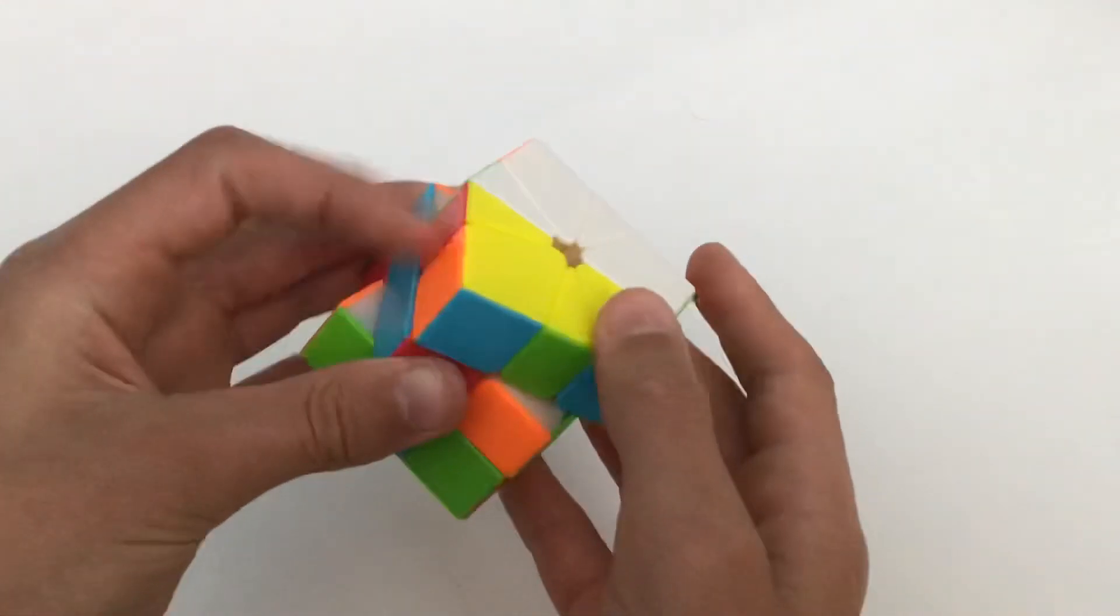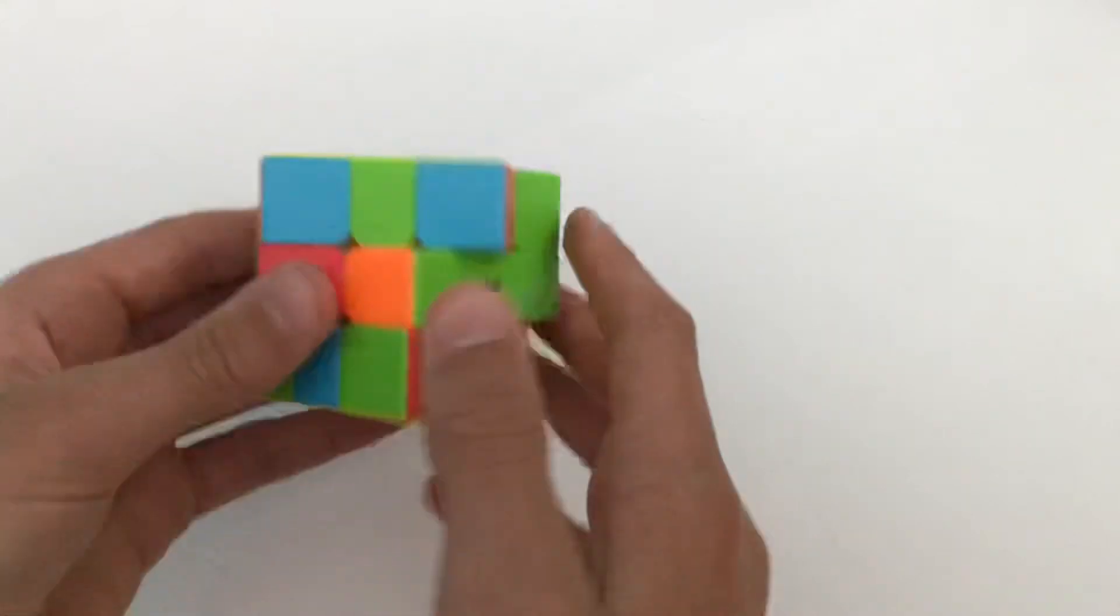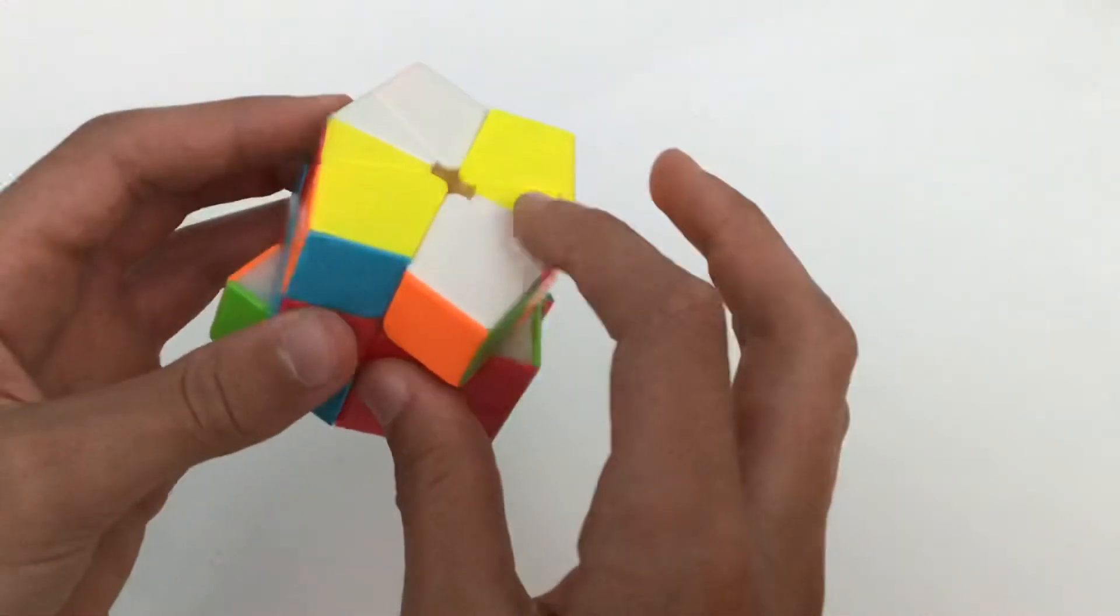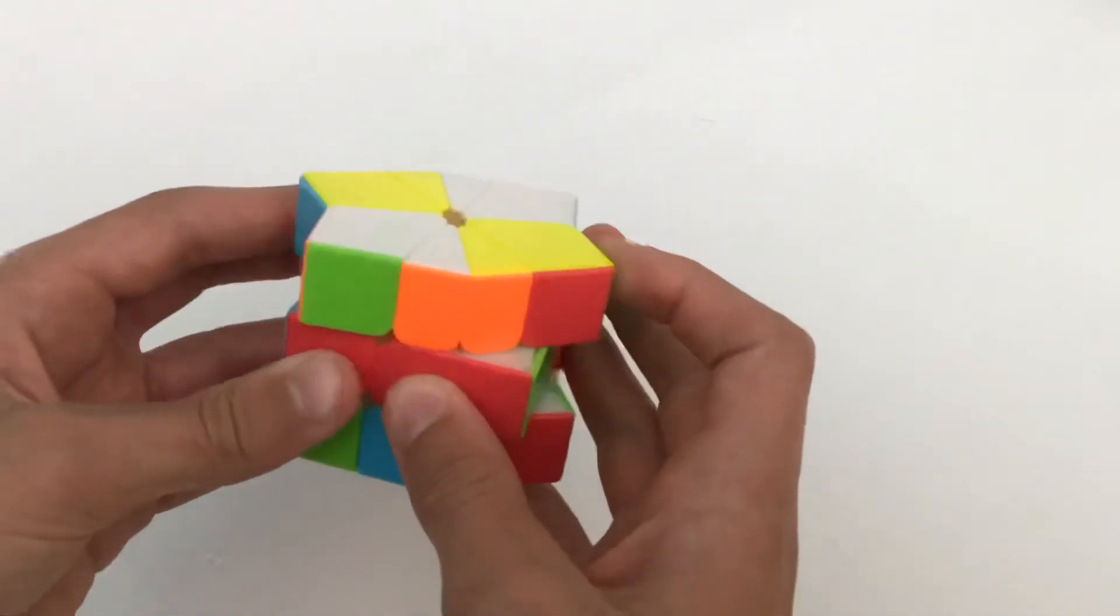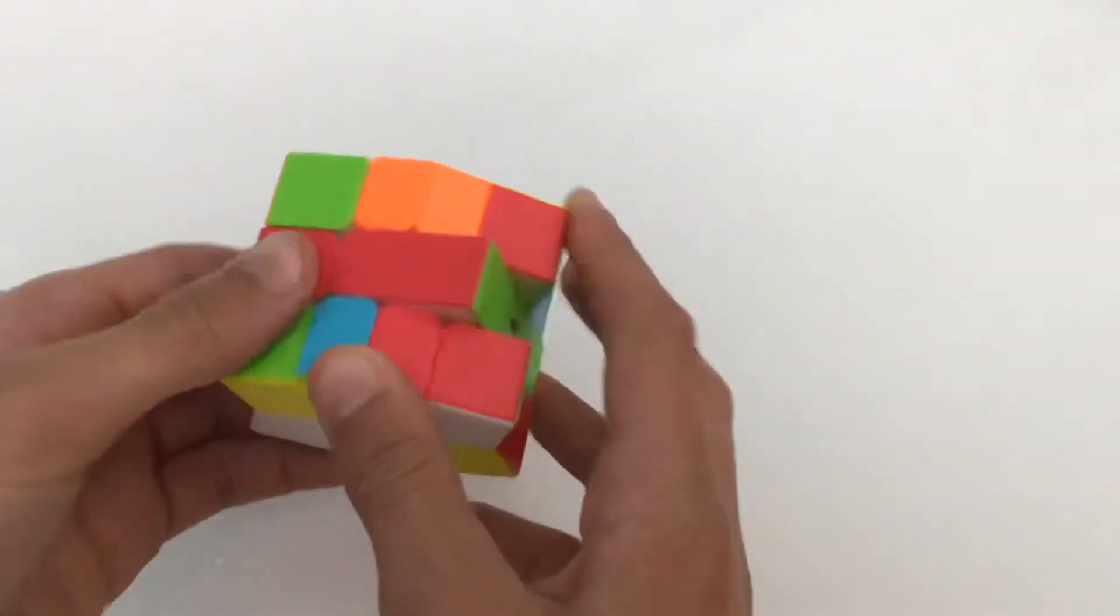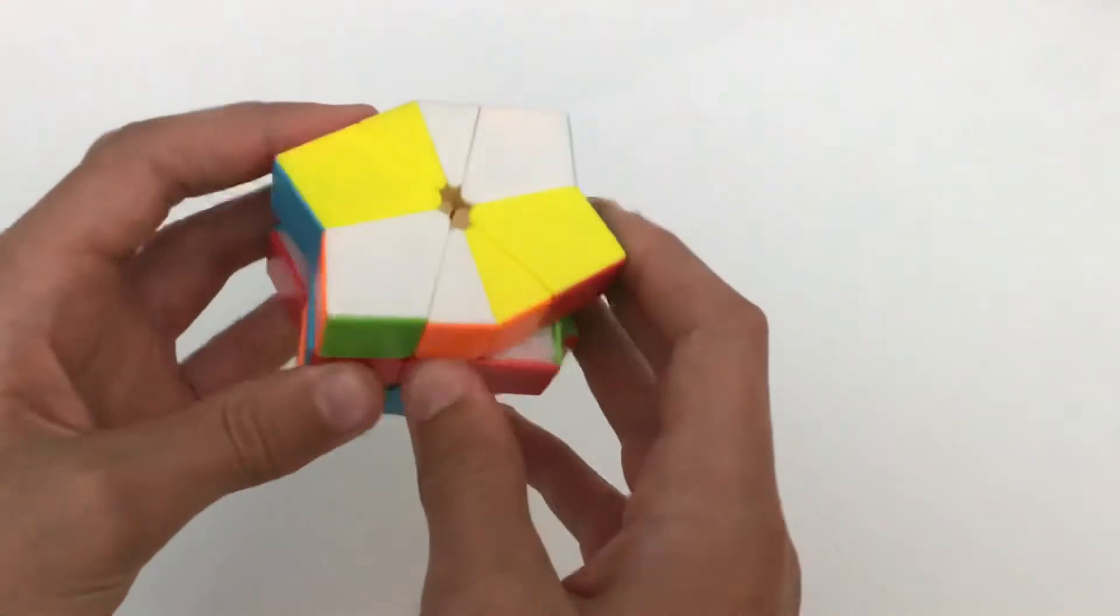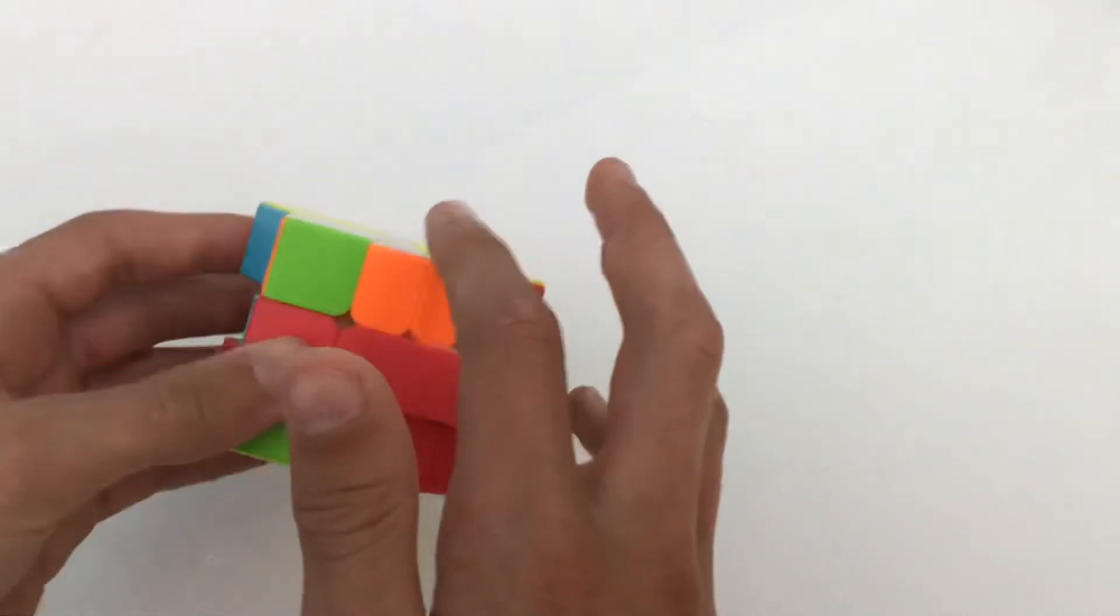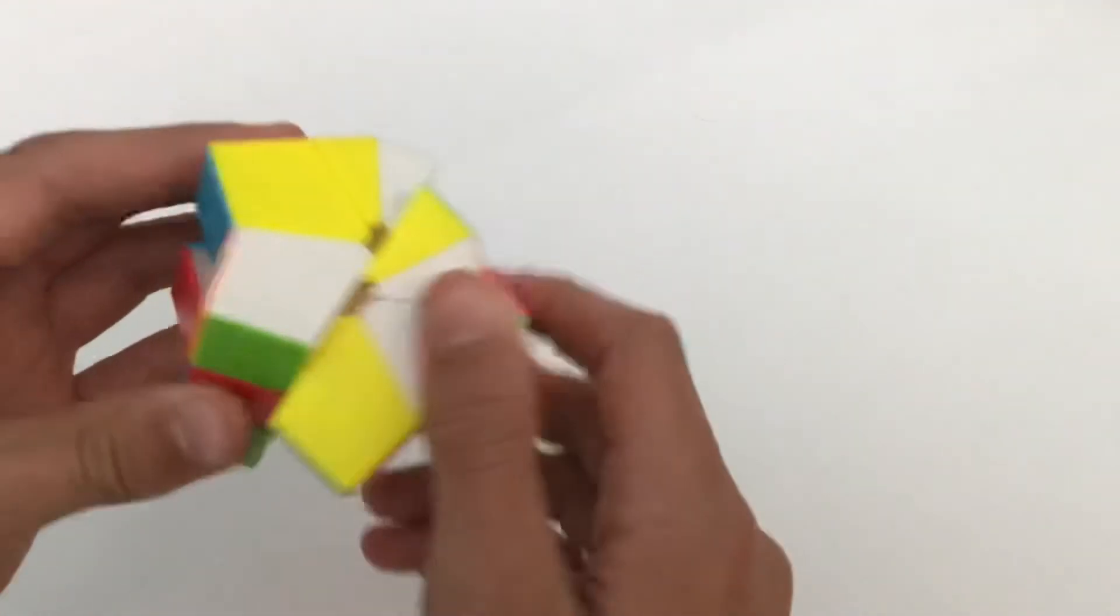Then what you need to do is make there be the two edges opposite from each other on the top and the bottom like that. And as you can see it should look like this. And then what you need to do is you need to pair these two edges with that one. So this edge would pair up here and then this would pair down here. So I can go like that.